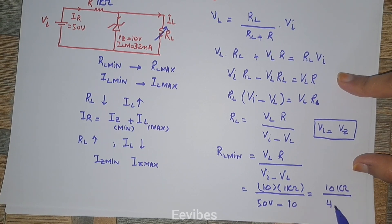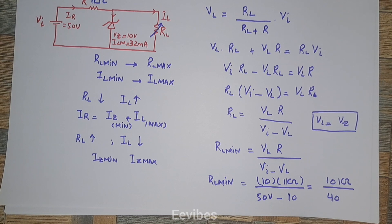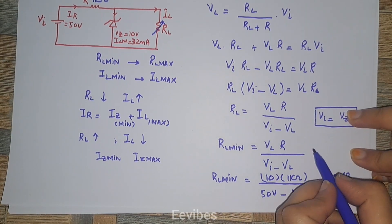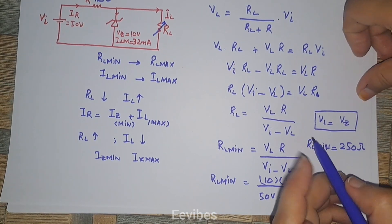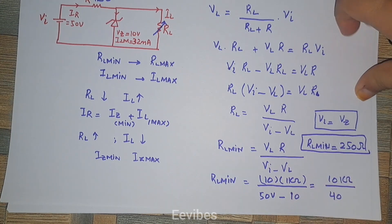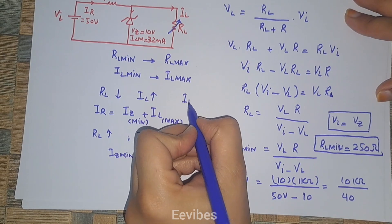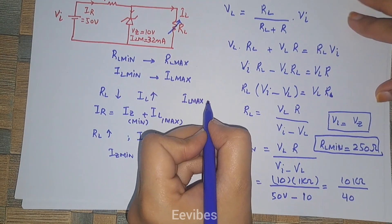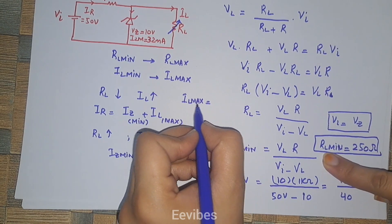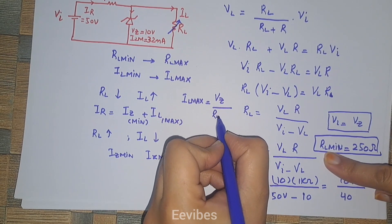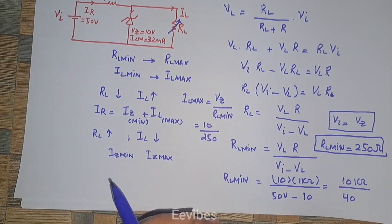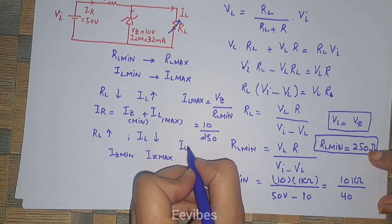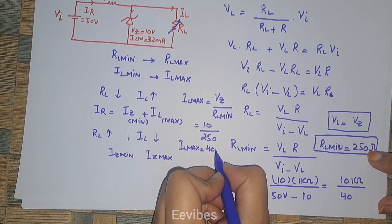Calculating: 10 kΩ divided by 40 gives RL_minimum = 250 ohms. This is the minimum load resistance that can be used in this circuit. Since there is an inverse relation between resistance and current, the minimum load resistance corresponds to the maximum load current. IL_max = V_Z / RL_min = 10 / 250 = 40 milliamperes.